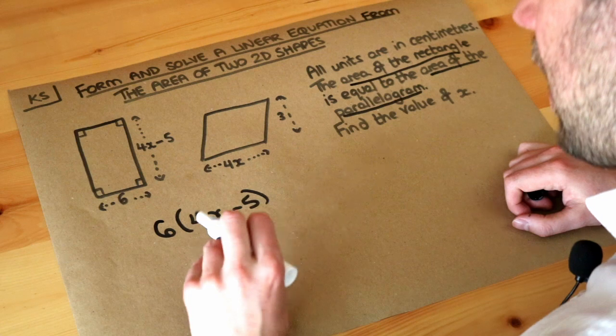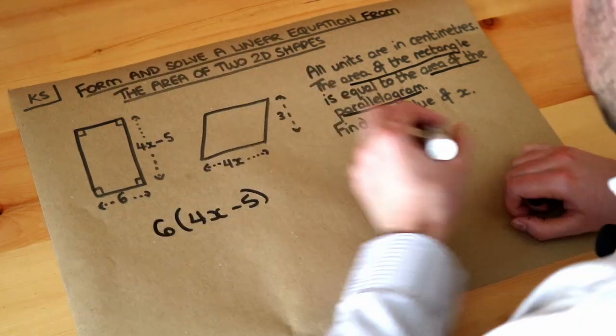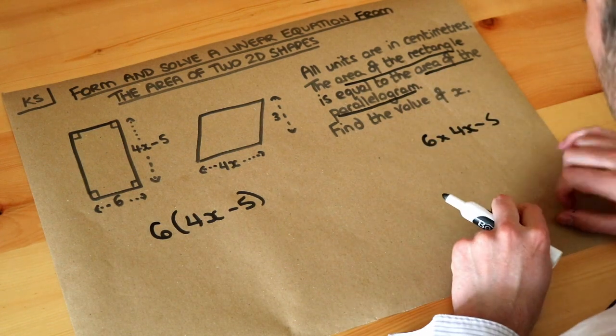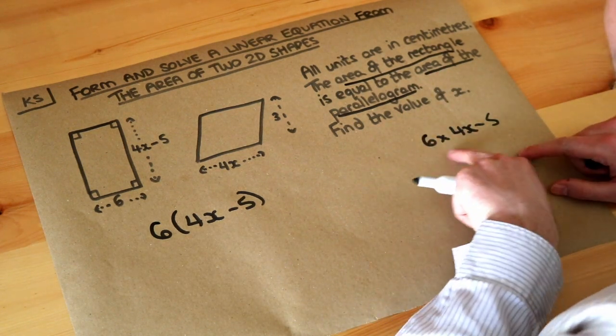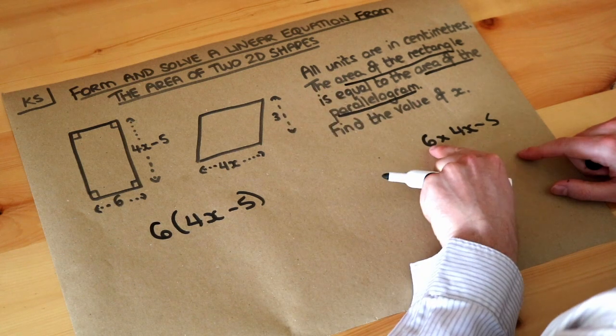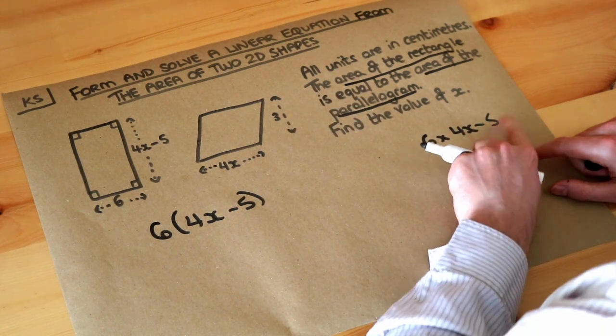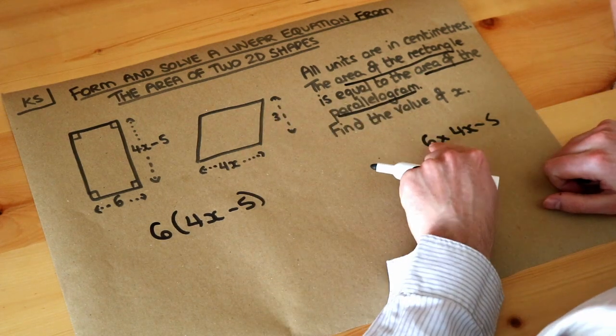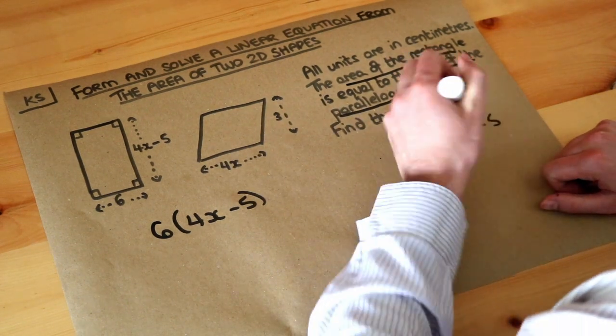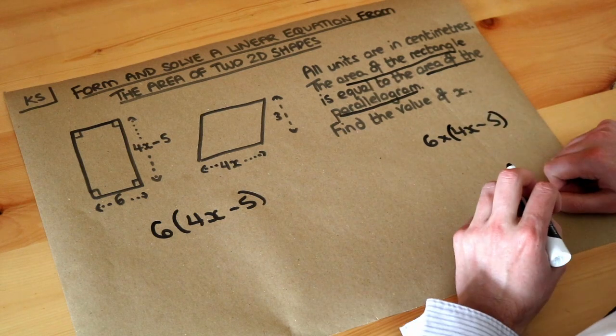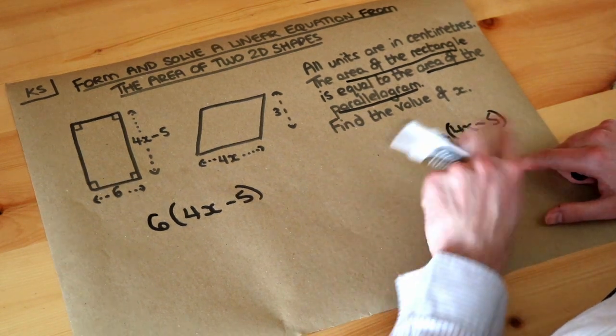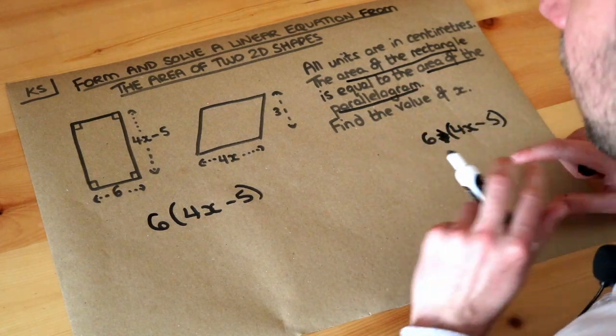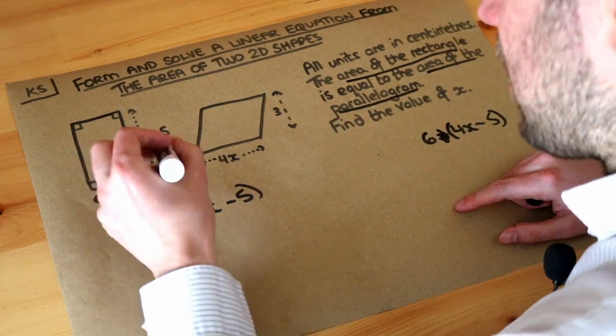Now you could write 6 times 4x minus 5, but that's actually wrong if I write it like that because of BIDMAS. This, by BIDMAS, order of operations means 6 times 4x minus 5. So there's almost like a bracket around this, which is not what you want. You want 6 times 4x minus 5. So you would need a bracket around that for BIDMAS to be right. But remember in algebra, if you have two things next to each other, you don't need this times symbol. So I could just write 6 brackets 4x minus 5. So that's the area of the rectangle.